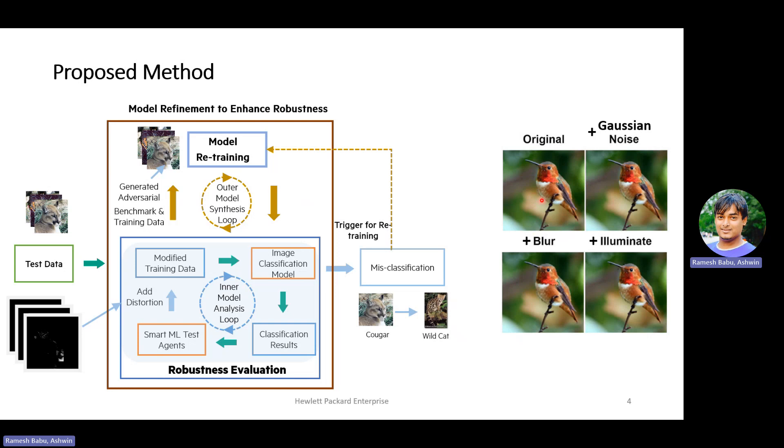We show different types of distortions added to the original image such as Gaussian noise, blur, and illumination. The distortions are very minute that it is hard to visually see, which proves to our point that minute distortions can still cause well-trained deep learning models to fail.